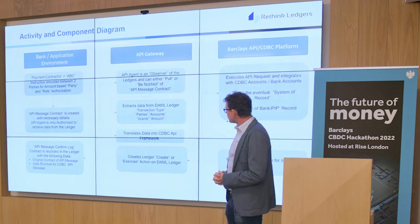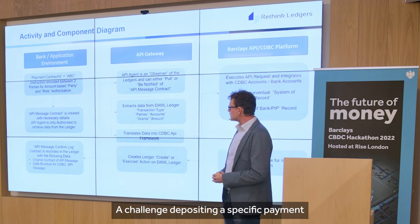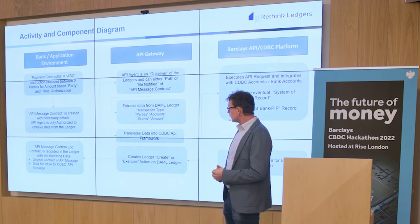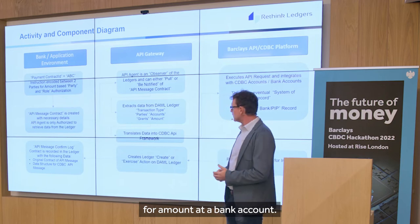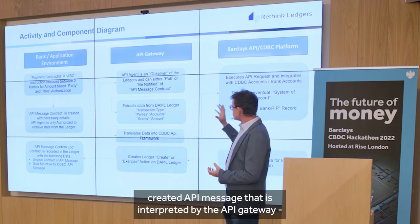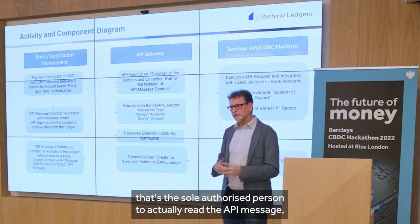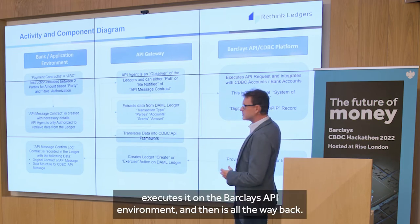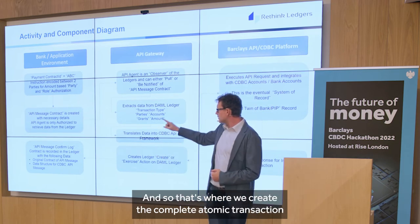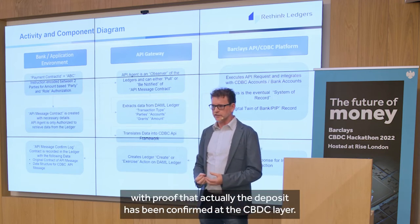Here's an example of how we executed one of those challenges — querying a specific account balance. We started at the smart contract layer, created an API message that is interpreted by the API gateway, which is the sole authorized entity to read the API message. It does the translation, executes it on the Barclays API environment, and returns the result — creating a complete atomic transaction with proof that the deposit has been recorded at the CBDC.